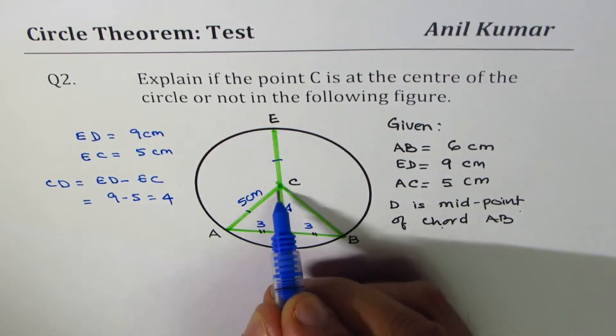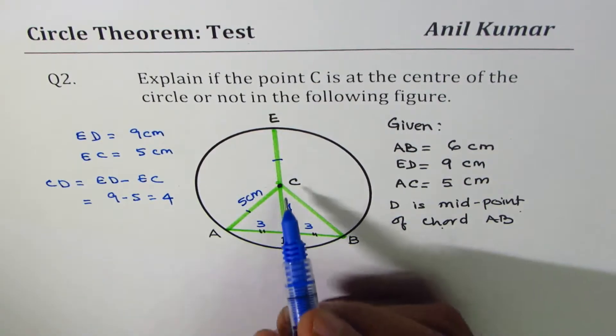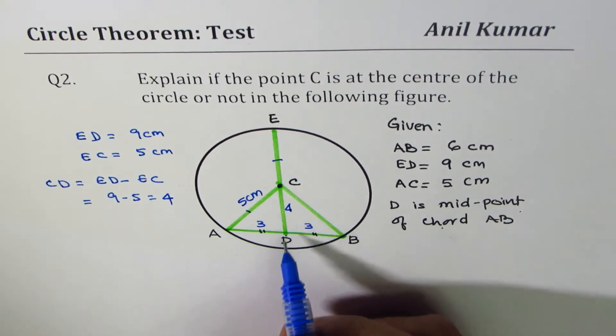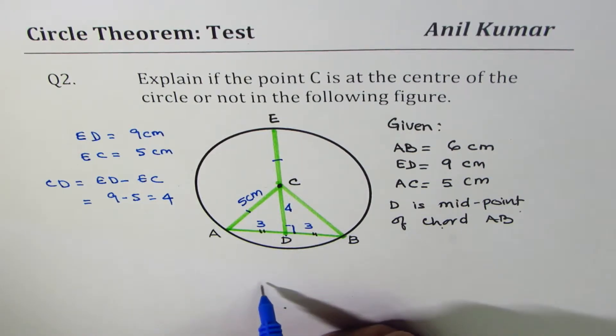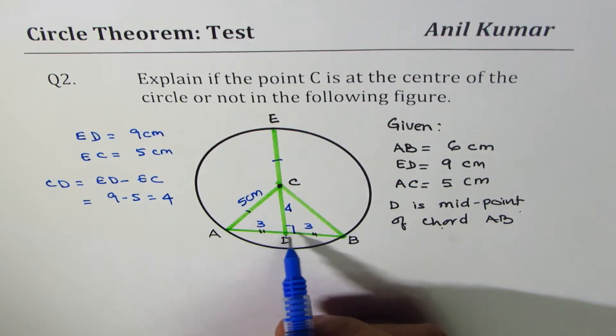Now if C is the center, in that case, joining midpoint, we should get a right triangle. Right? Is it okay? So we should get a right triangle.